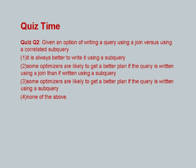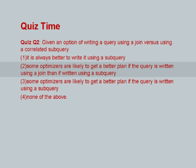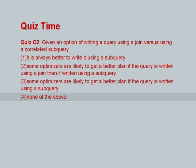We can wrap up this session with a short quiz, just to check if you understood what I just told you. The question is: given an option of writing a query using a join versus using a correlated subquery, the options are: first, it is always better to write it using the subquery; second, some optimizers are likely to get a better plan if the query is written using a join than if it is written using a subquery; third, some optimizers are likely to get a better plan if written using a subquery; and fourth, none of the above.